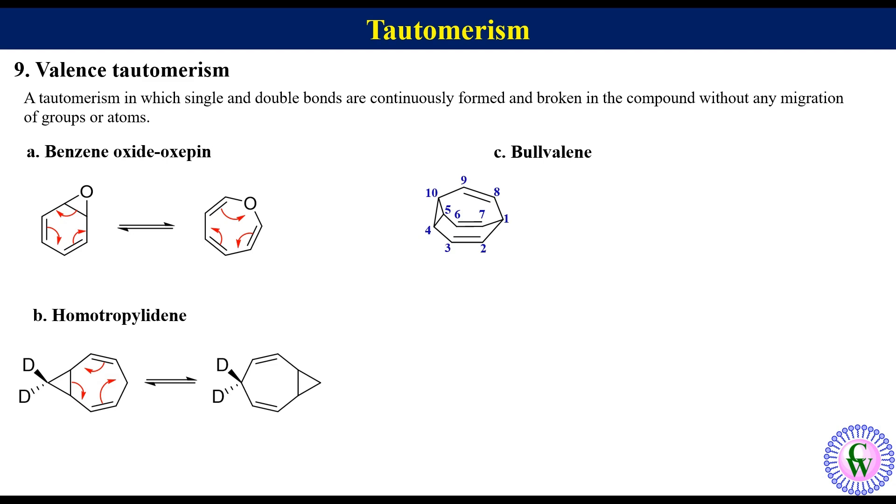If it undergoes Cope rearrangement like this, it will give this equivalent structure in which carbon 1, 2, and 7 are the part of cyclopropane ring. But this molecule could have also undergone such rearrangement to produce cyclopropane ring at 1-7-8 or 1-2-8, etc.